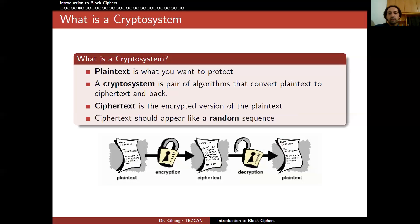But it should appear like a random sequence so that it should not contain any trivial information about the plaintext. So without the secret information, an adversary should not be able to obtain some parts of the plaintext from the ciphertext. So a good cryptosystem would provide a ciphertext that doesn't have any information about the plaintext. And the person who has the secret information can decrypt the ciphertext and obtain the plaintext.